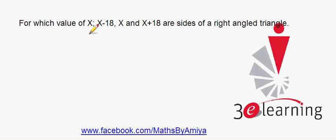Hello, we have to find a value of x for which x minus 18, x, and x plus 18 become a part of a right-angled triangle. There is no need to make equation of x minus 18 square plus x square equals x plus 18 square.